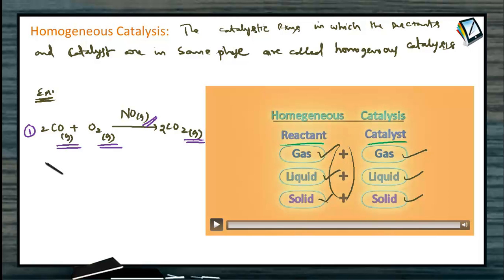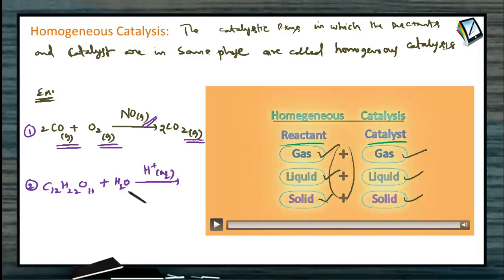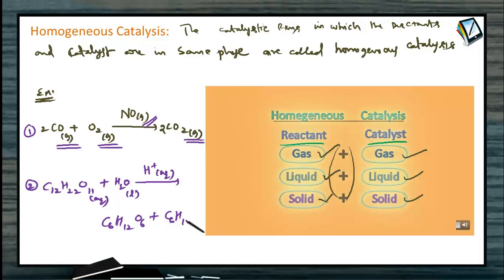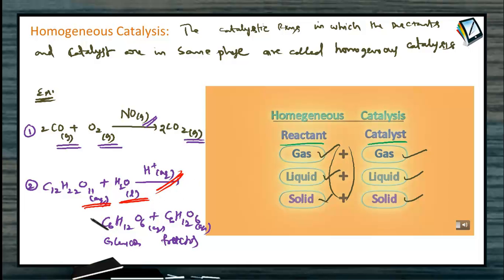Another example: hydrolysis of sugar — C₁₂H₂₂O₁₁ with water, which is also in the liquid state, in the presence of an aqueous acid catalyst. All are present in the liquid state, so you cannot separate them. It forms the corresponding glucose and fructose. Since everything is in aqueous solution, it comes under homogeneous catalysis.